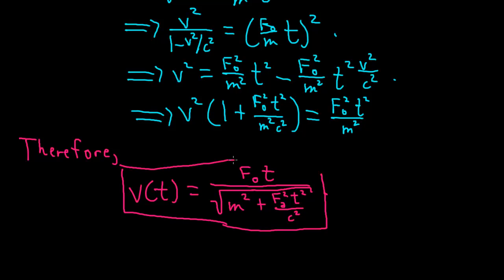Does this agree with our intuition? For small t, before this gets anywhere near the speed of light, F0 t is much smaller than c. So in the denominator, this is just roughly m, so v of t equals F0 over mt. That's exactly the classical result.